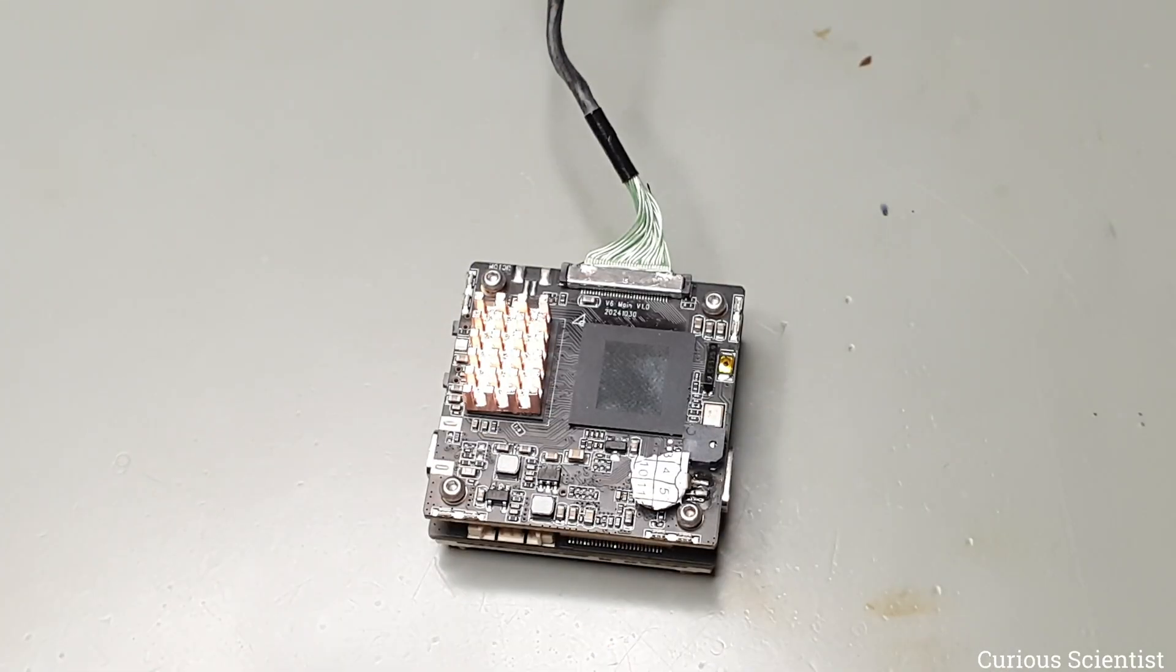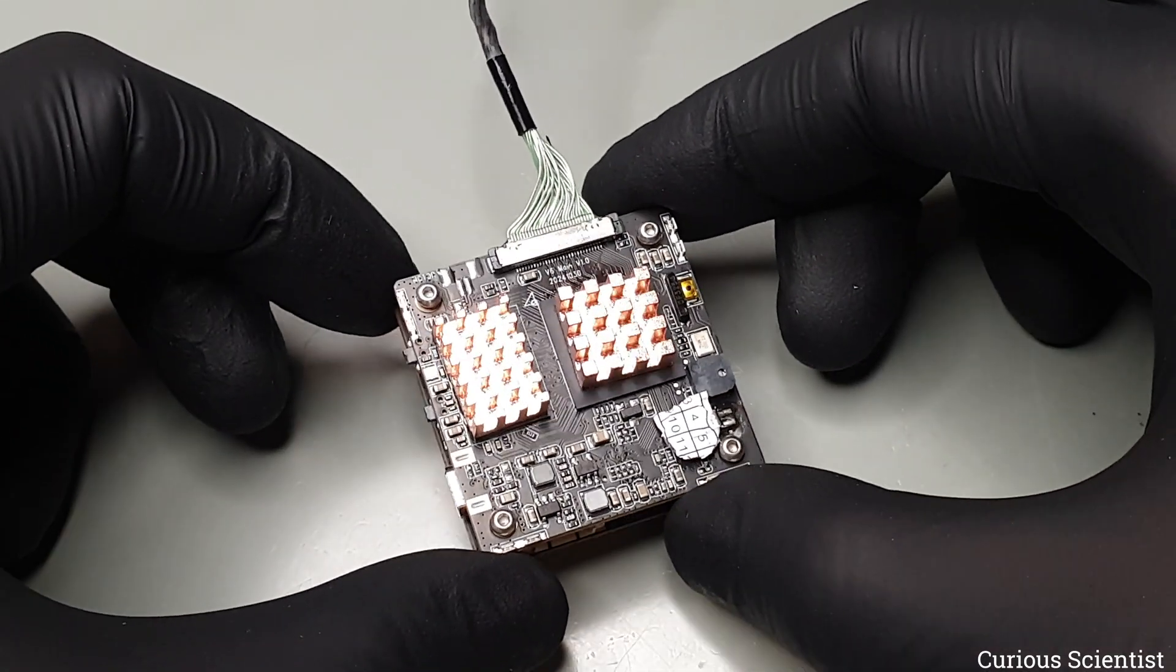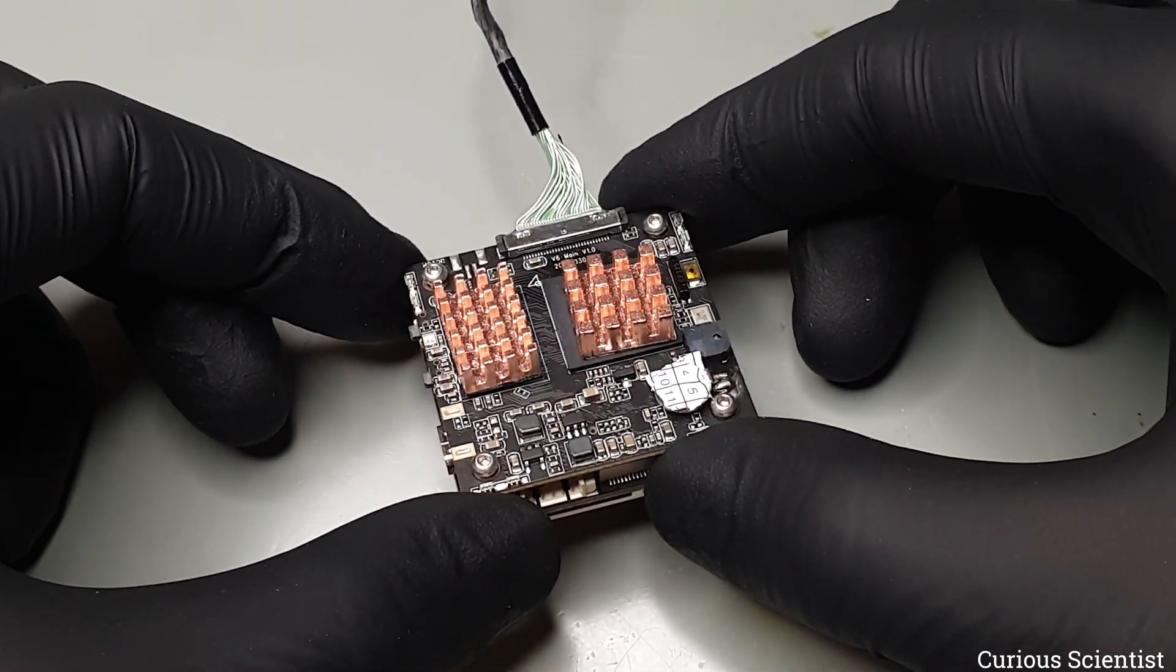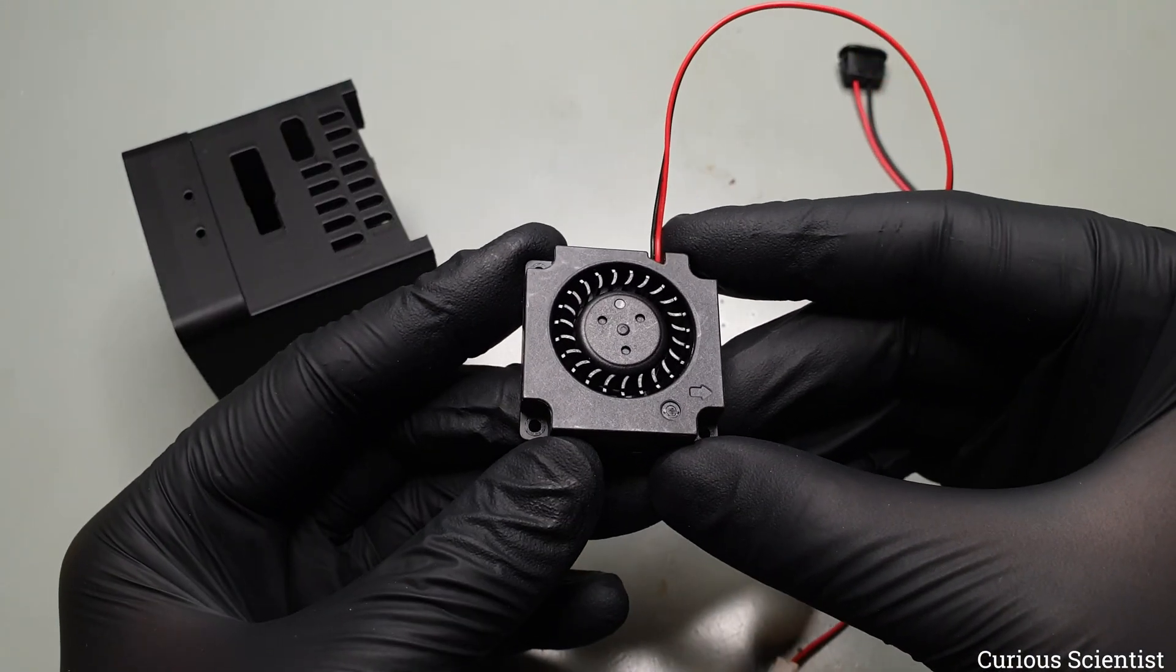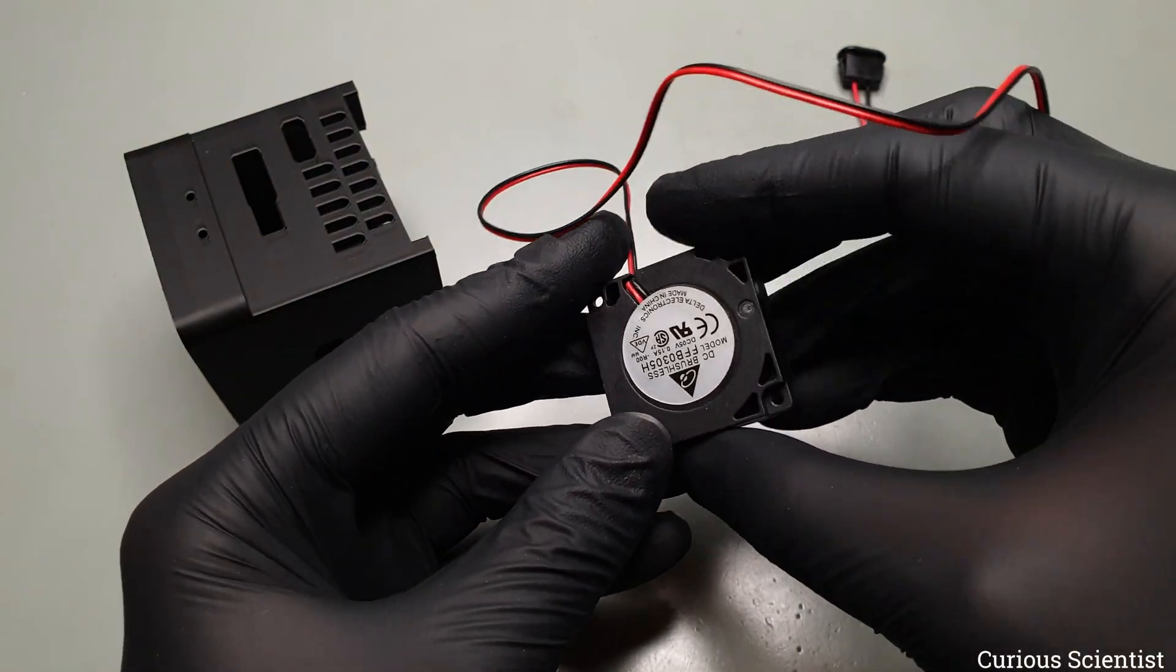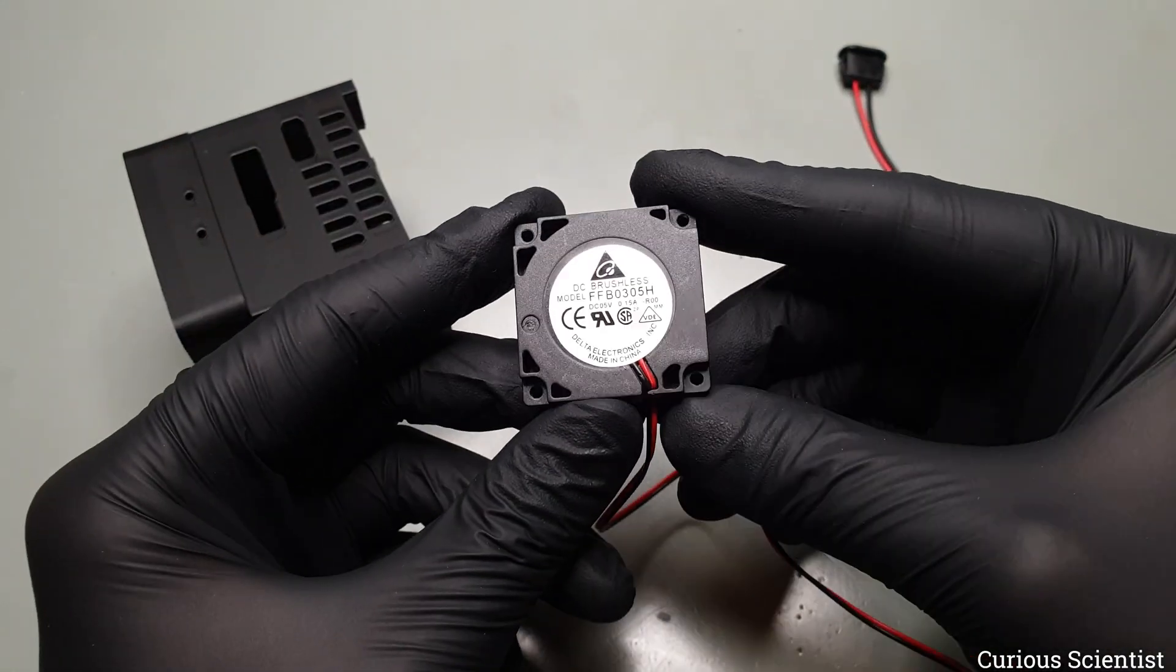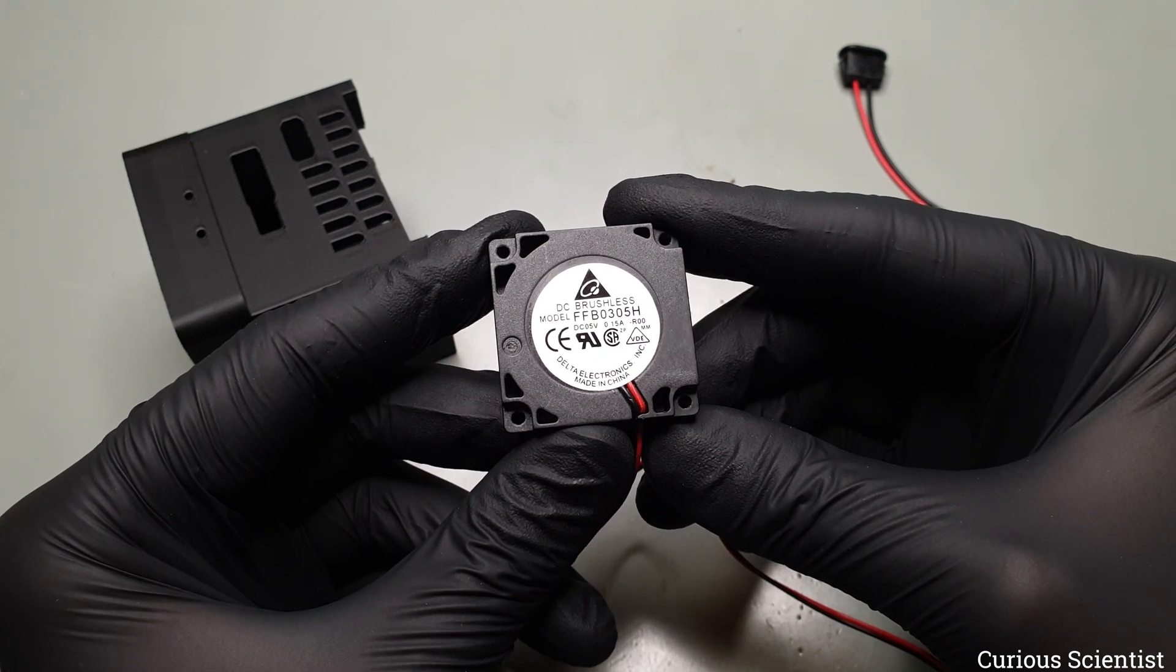By removing the metal shell and directly attaching the heatsink to the chips, I already greatly improved the cooling of the module. But I did not stop here, I added active cooling to the camera in form of a 30mm radial fan. The fan will be attached to the rear cover of the module, and it will be continuously operated from an external 5V power source. I will show this soon.